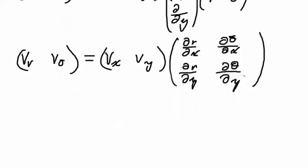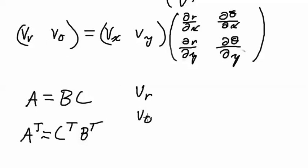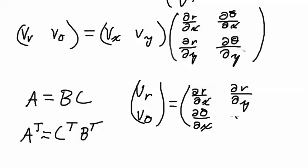Now, if you know anything about taking the transpose of a transpose of a product of matrices, you'll notice that if I have A equals B C, and I want to get A transpose, I need to take C transpose times B transpose. So, in this case, we'll find that v sub r, v sub theta, which is the transpose of v sub r, v sub theta that way, will be the transpose of this, which is del r, del x, del theta, del x will come down this way, and then del r, del y, and del theta, del y will come down this way, and then we'll multiply that by v sub x and v sub y coming over here.